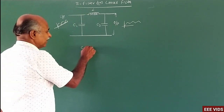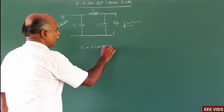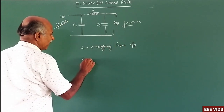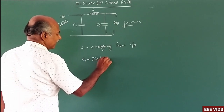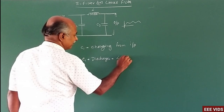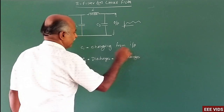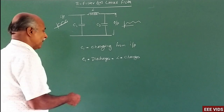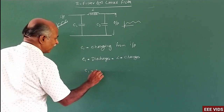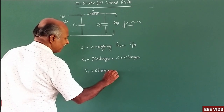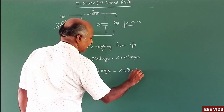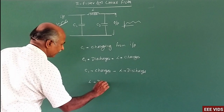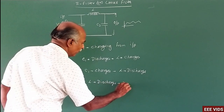C1 charges from the input while C2 is discharging to the output. Then C1 discharges and L charges — energy is stored in L. Then C1 charges again and L discharges. L discharges, and C2 charges. This cycle repeats: L discharges and C2 charges continuously.